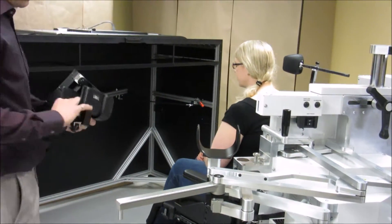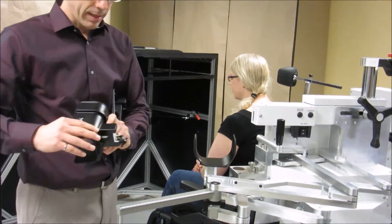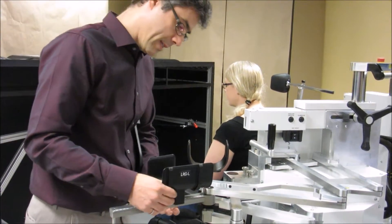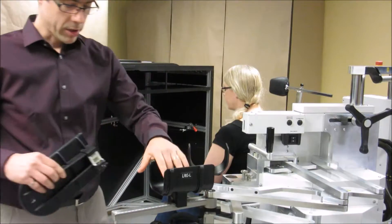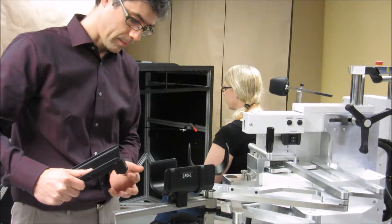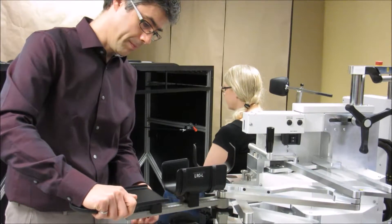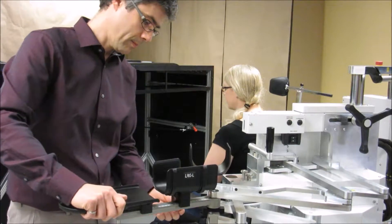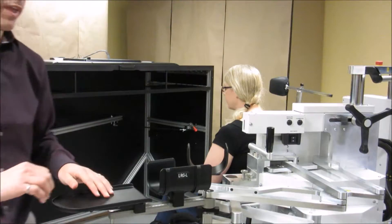We also need the forearm trough and the hand trough. These can be slid on from the end or alternatively, if the screw is loosened, you can actually rotate it on like that as well. I now need to go do the same for the other arm.